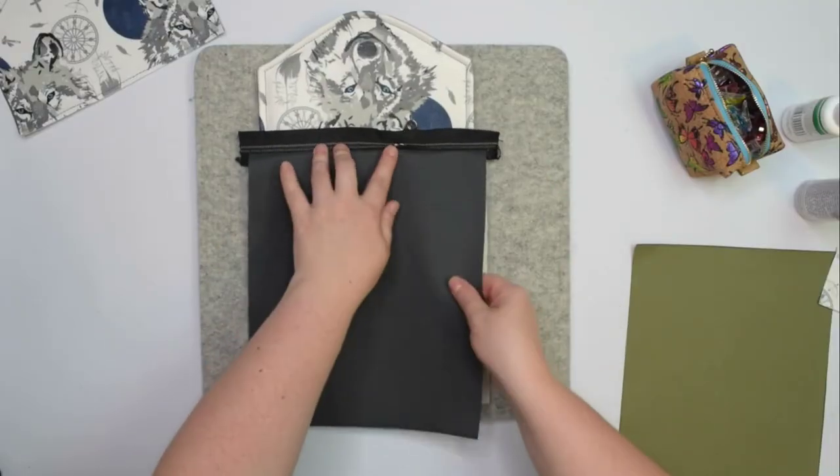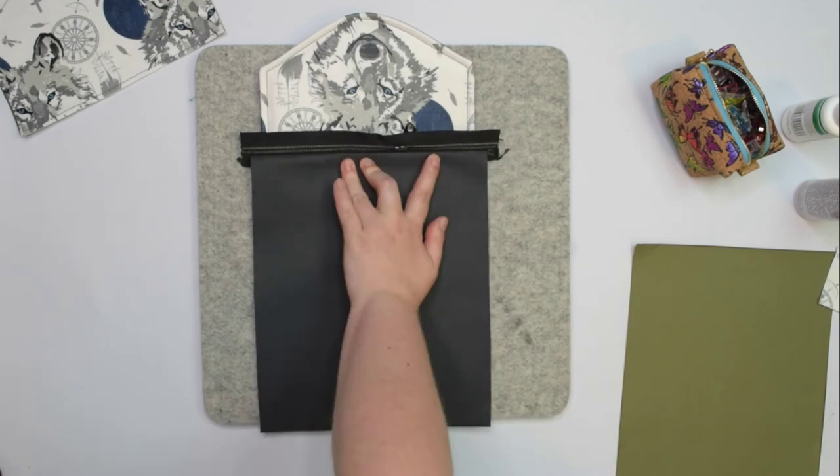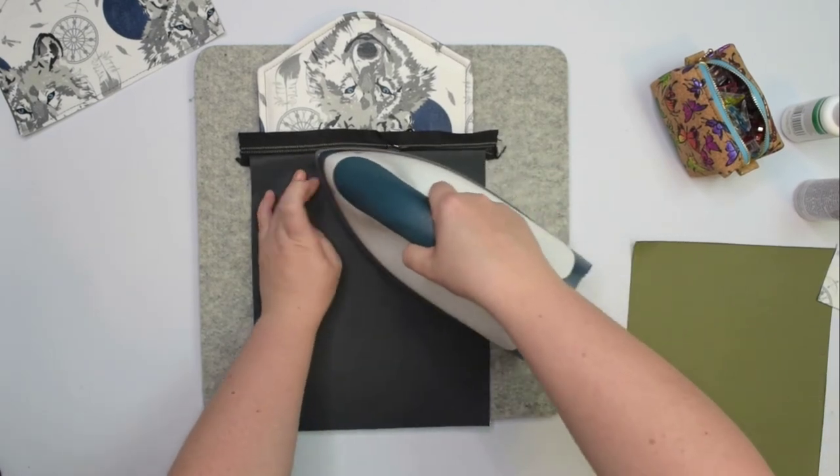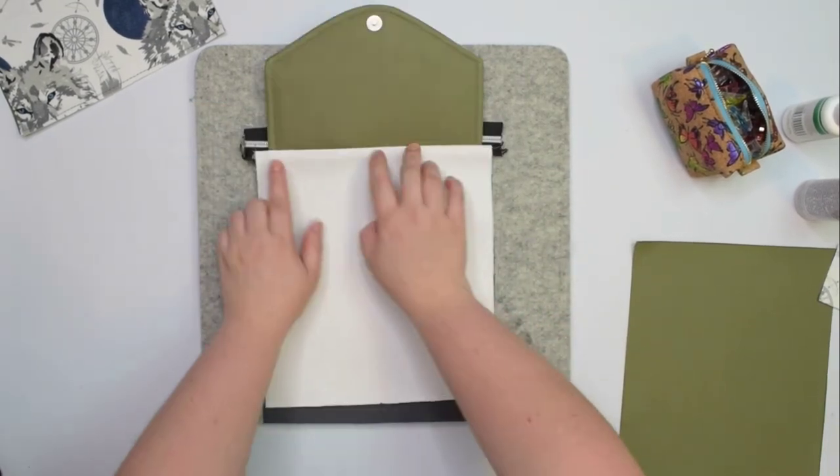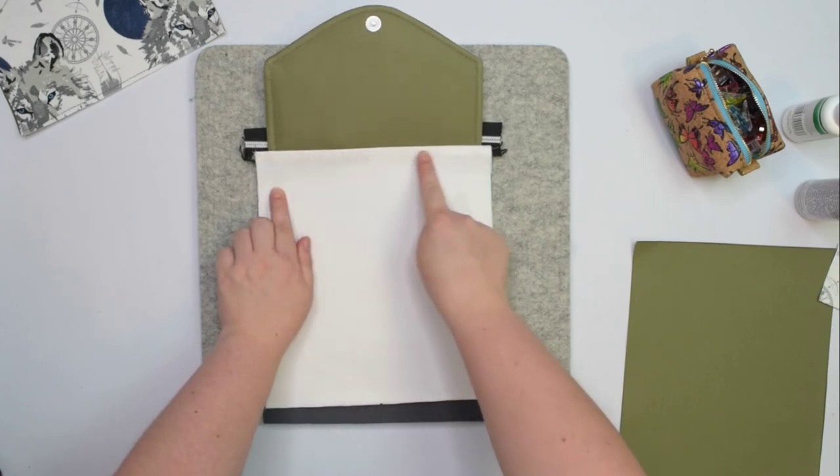Bring the panel's wrong sides together and keeping the flap open, press the seam flat. Then we're going to topstitch along the seam.